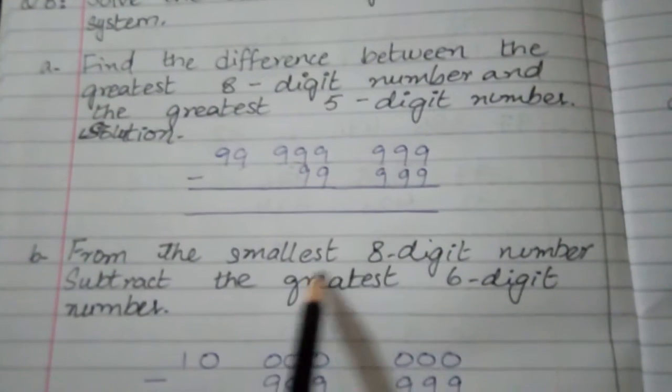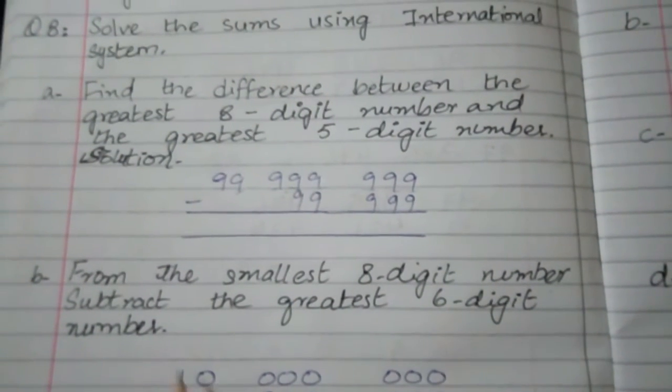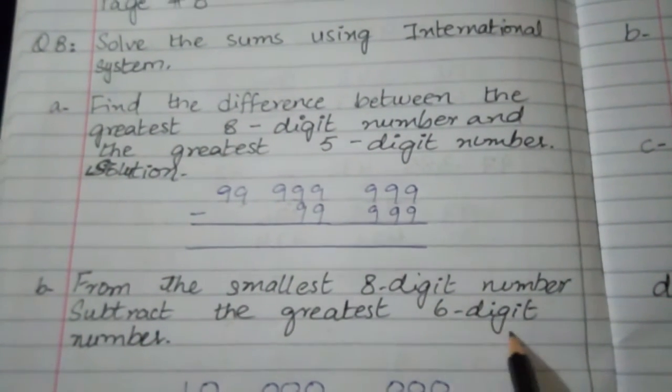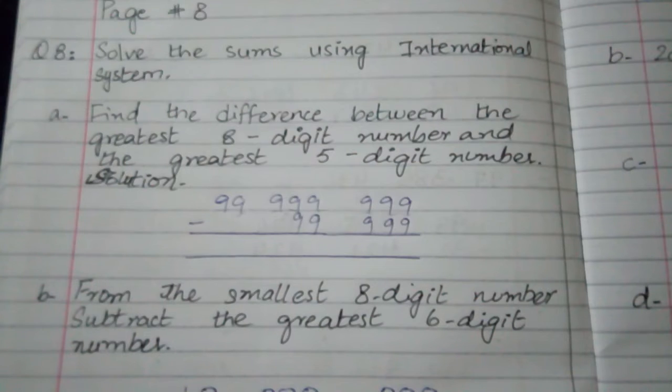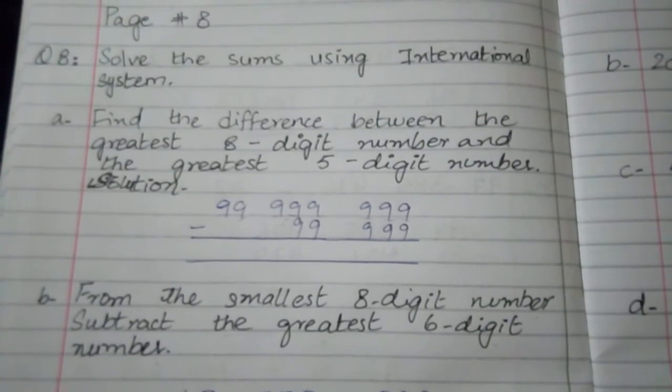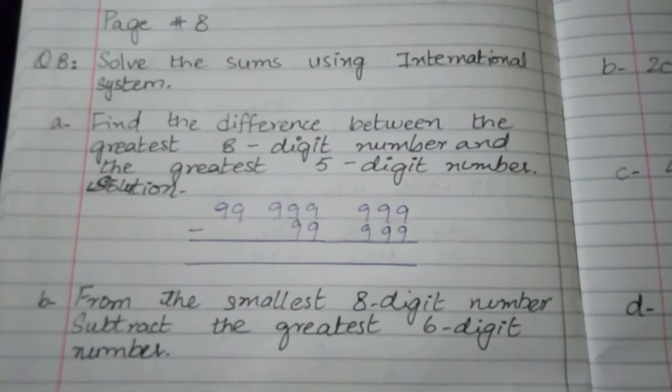Part B: Subtract the greatest 6-digit number from the smallest 8-digit number.